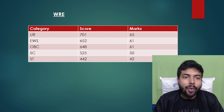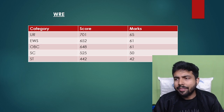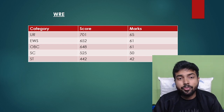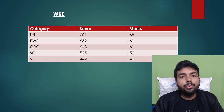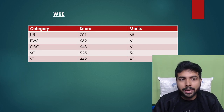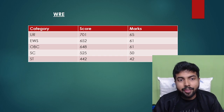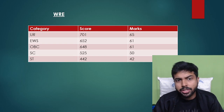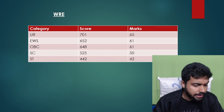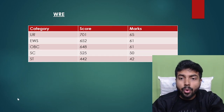For Water Resource Engineering, general category requires around 700 score, which is about 65 marks. EWS requires 61 marks, and OBC also requires 61 marks — EWS gate score is 652 and OBC gate score is 648. SC category requires 50 marks, around 525 gate score. ST category needs around 41 to 42 marks.